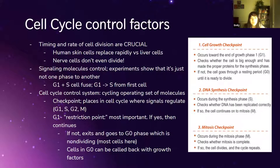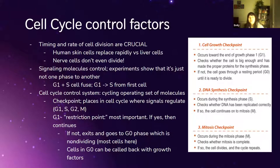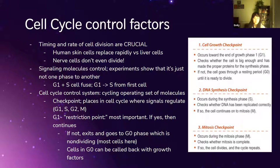There was an experiment where a cell in G1 phase and a cell in S phase were fused together. People previously thought cells just moved from one phase to another automatically, but they found that a signal in the S-phase cell also signaled the G1 cell to enter S phase — so both ended up in S phase. This shows there are signals that help cells move from one phase to another.